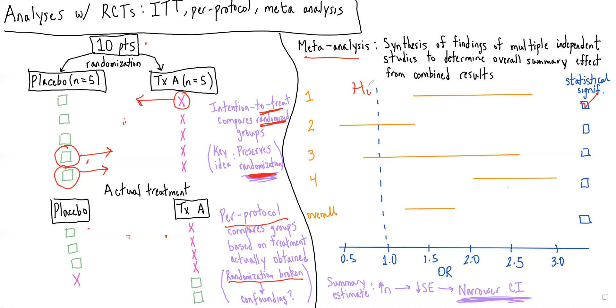We see that study two is not statistically significant because it does cross our null value. Study three is also not statistically significant because it crosses our null value. Study four is statistically significant. And we see that our overall summary statistic, which combines the findings of all four of those studies, is statistically significant.